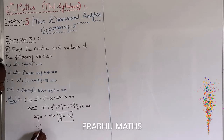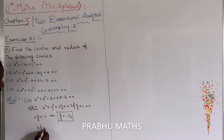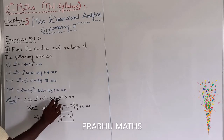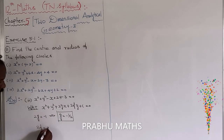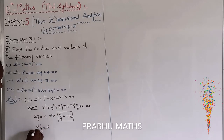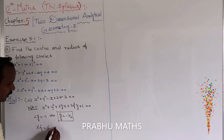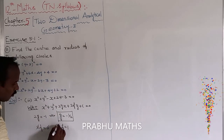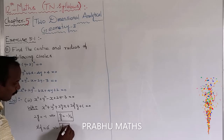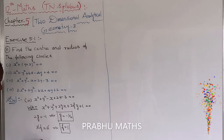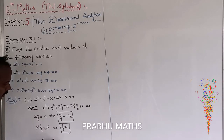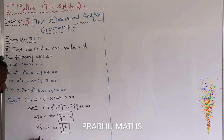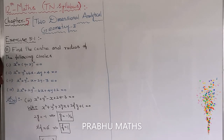Next, 2f is equal to the coefficient of y, which is equal to 2. The 2s cancel, which implies f is equal to 1. Next, c is equal to the constant, minus 3. That is our c value.